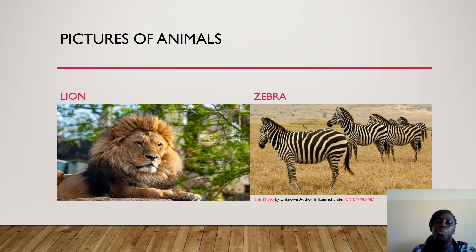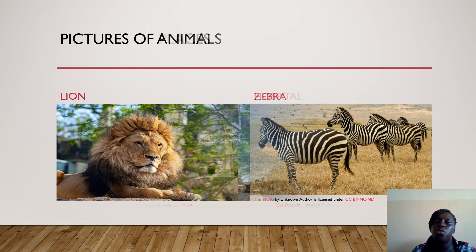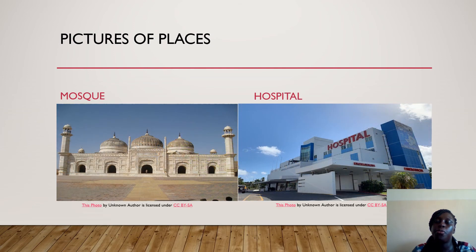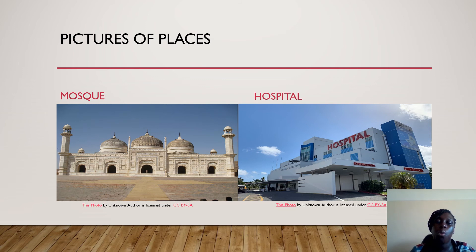We move on to pictures of animals. As you can see on your screen — lion and zebra. We move on to pictures of places — mosque and hospital. Those are the pictures of the mosque and the hospital.